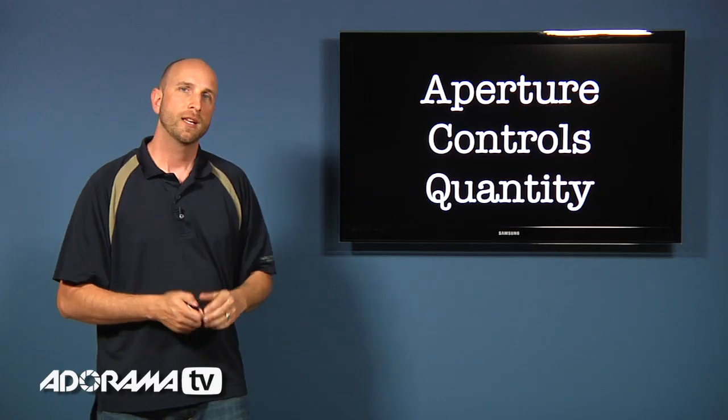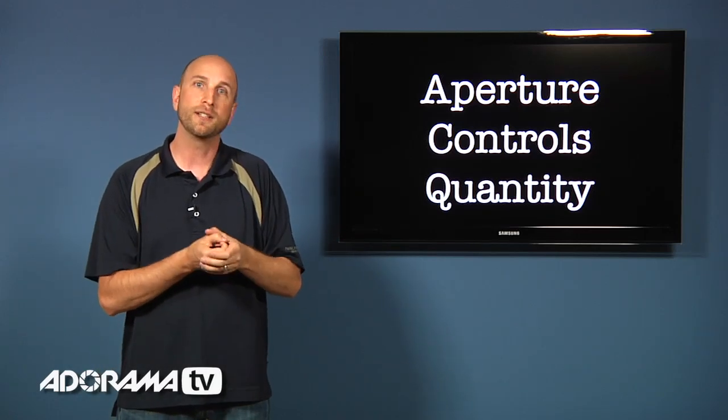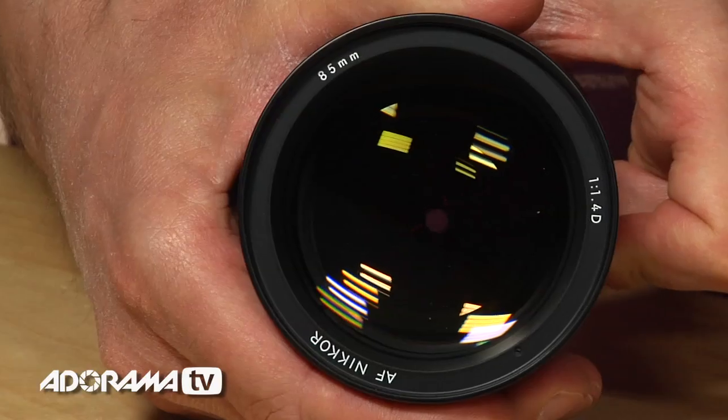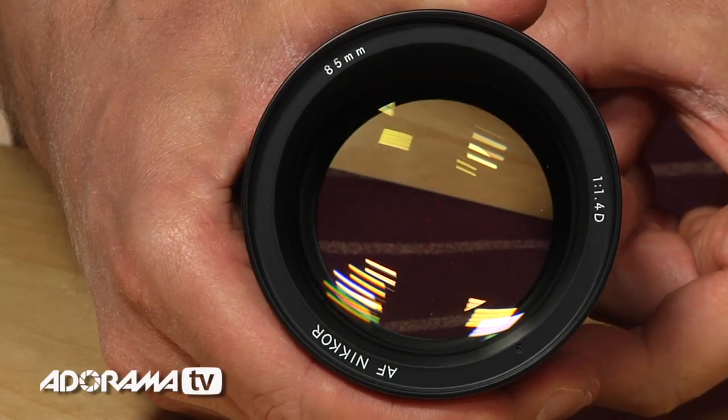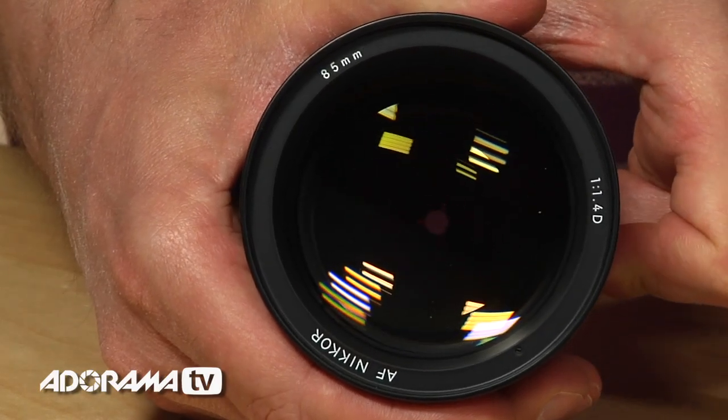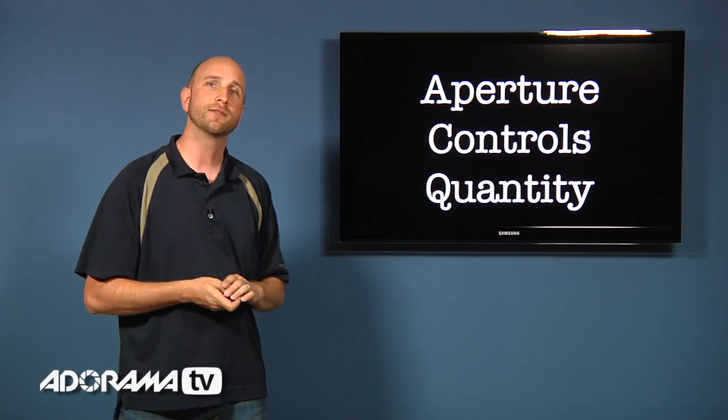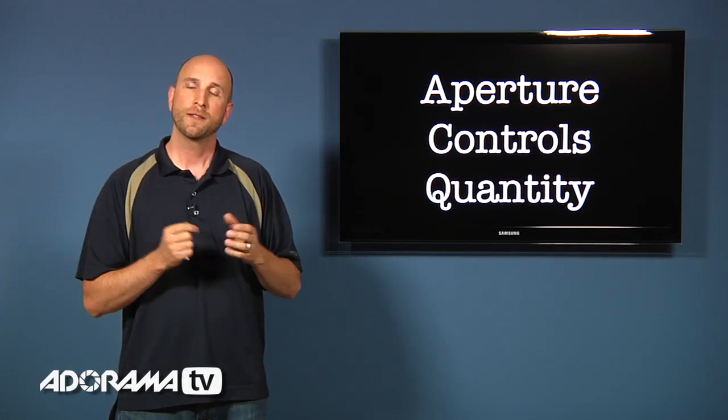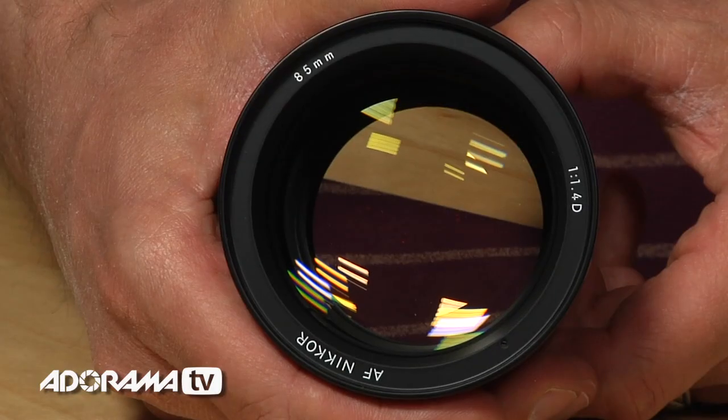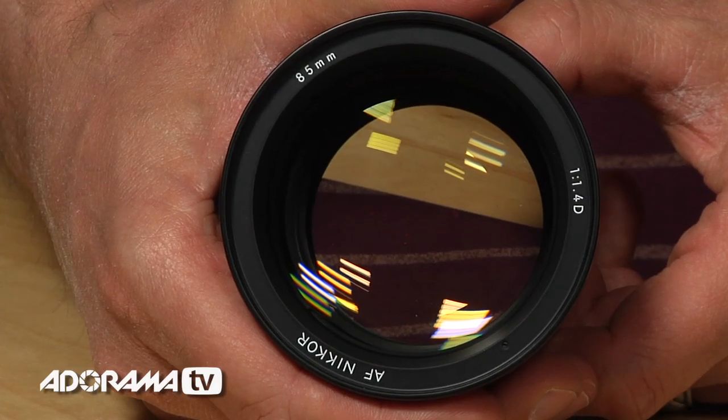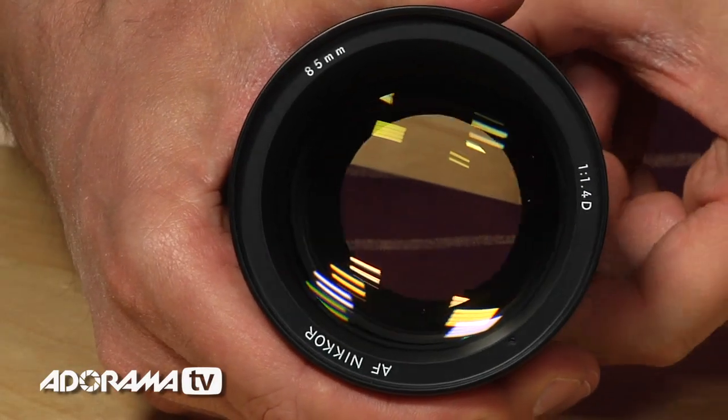So let's talk about these things one at a time. Now the first thing is aperture. Now aperture is sort of like a hole inside your lens. It's always open. It can get larger or smaller and it controls the quantity of light that goes through the lens. So if the aperture has a wide opening, lots of light is going through. If it has a small opening, not so much light is going through.